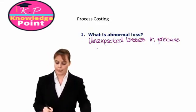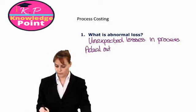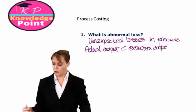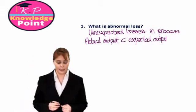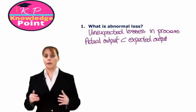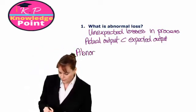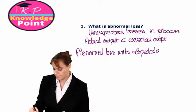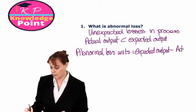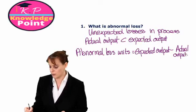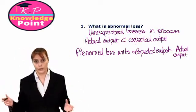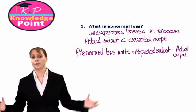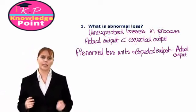Abnormal losses occur when our actual output is less than our expected output. So the number of good units which we have output from our process is less than we had expected or planned. The number of abnormal loss units we have is just the difference between our expected output and our actual output. So our abnormal loss is the units we didn't expect to lose. We need to understand how we deal with abnormal loss in our process accounts and what value we place on abnormal loss units.